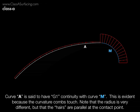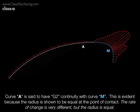They're touching. They're not the same length because the radius changes — the radius at the end of curve A is very different from the radius at the beginning of curve M — but they do move in the same direction and therefore are tangent. In this case, we can see that the radius is the same at the contact point, making these two curves curvature continuous, or G2 continuous.